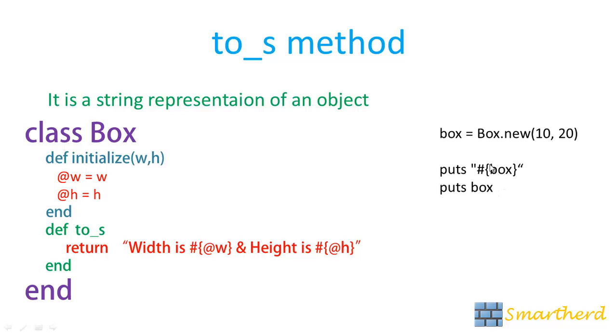We use interpolation within the double quotes only whenever we are printing a string. Now puts box. When you write simply this box this will simply call this method and again same thing will occur. Width is 10 and height is 20.